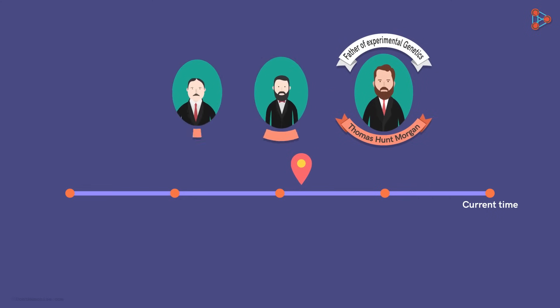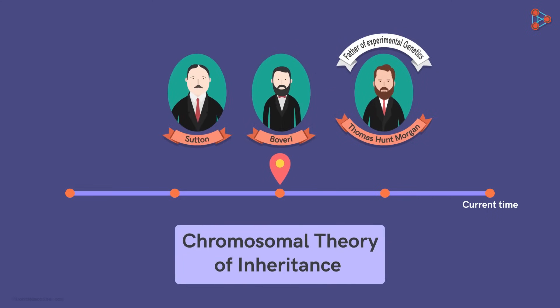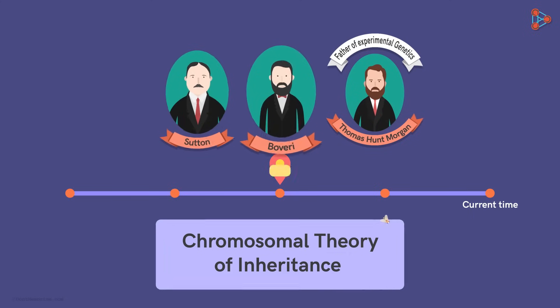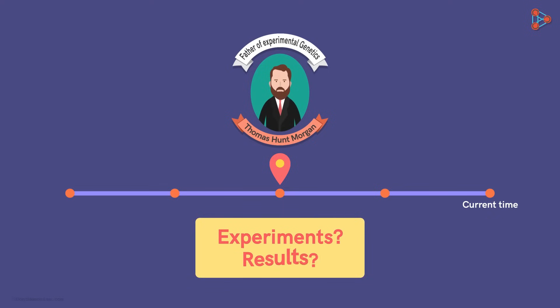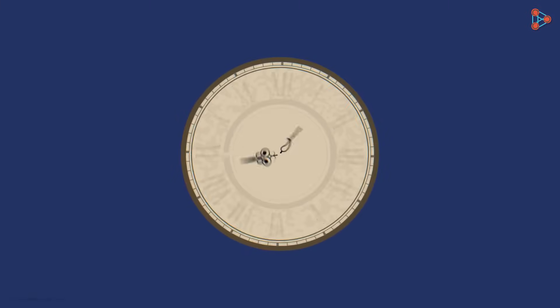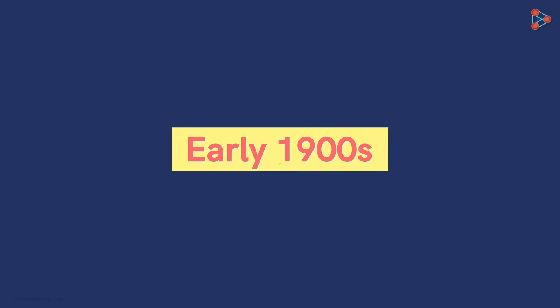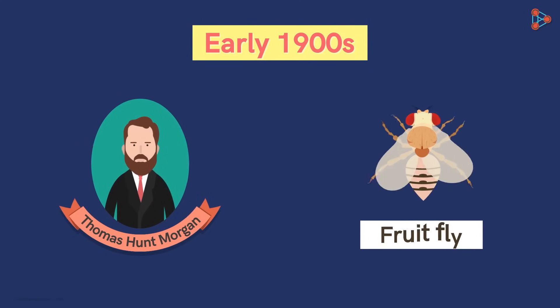Following Boveri and Sutton's chromosomal theory of inheritance, Morgan and his colleagues carried out many experiments on the common fruit fly which served as further confirmation for the theory. Let us travel back in time to the early years of the 20th century. It was around the early 1900s that Thomas Hunt Morgan started working on fruit flies with a determination to find something new.